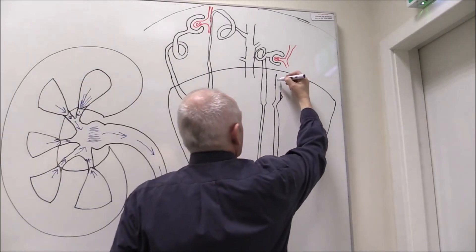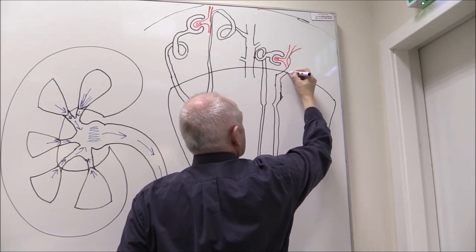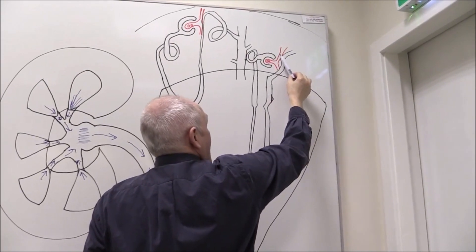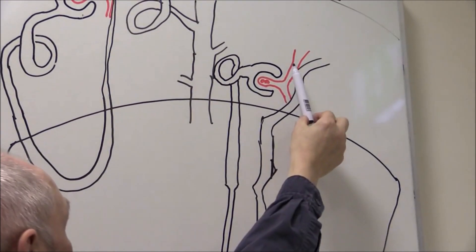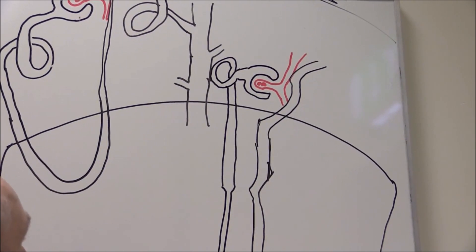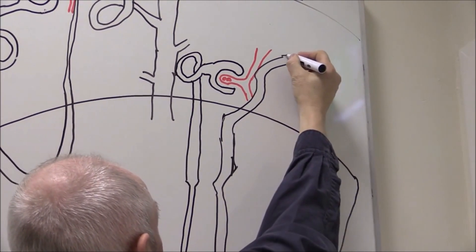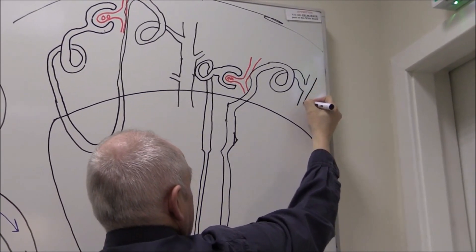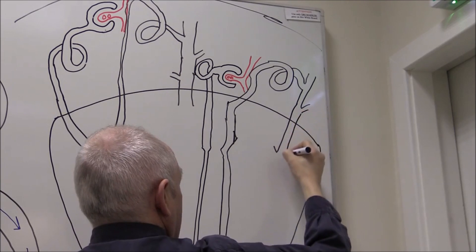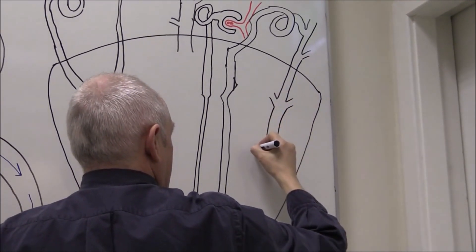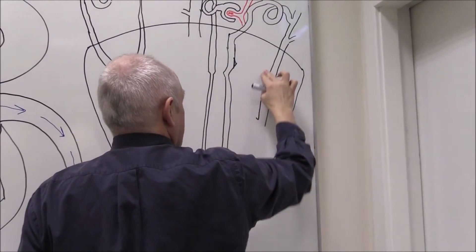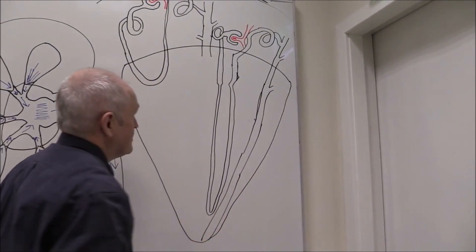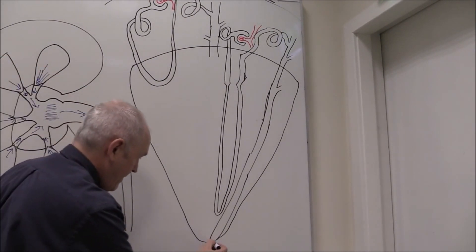The ascending loop is going to pass very close to the afferent arteriole associated with the same nephron. Then there's going to be another convoluted tubule — a second or distal convoluted tubule. And then again this material is going to pass into a collecting duct. That collecting duct is going to go down through the medulla, all the way down to the base where the urine is going to drain out at the papilla.